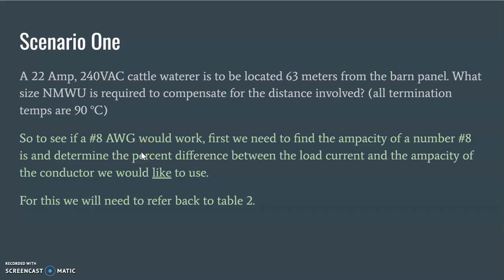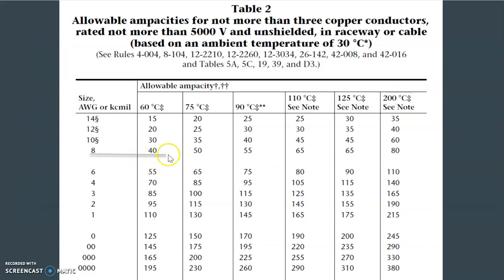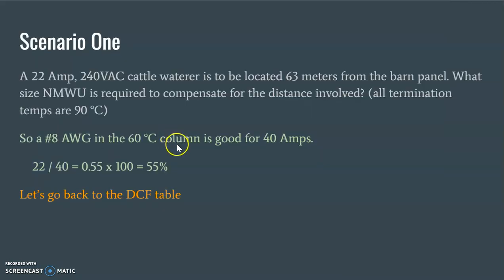So first thing we got to do is if we're trying to go to a number 8, we have to figure out what the ampacity of that number 8 is, and then figure out what the percent difference is between the load that we're going to place upon it and what the ampacity of the cable is that we would like to use. So we have to go to Table 2 for that. So let's take a look at Table 2. And again, remembering that it's NMWU and it's only good for 60 degrees Celsius, we have to go down this column here, and a number 8 is good for 40 amps. So now that we know that and we know what our load is, because we've got that in our scenario here, 22 amps divided by 40 is 0.55, times that by 100, and it gives us a 55 percent loading of our cable.